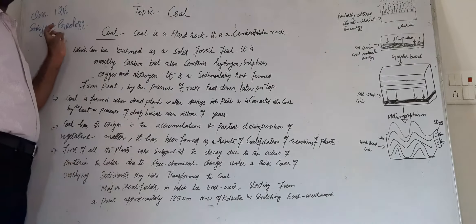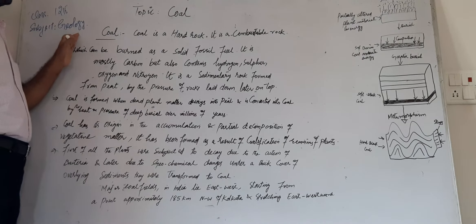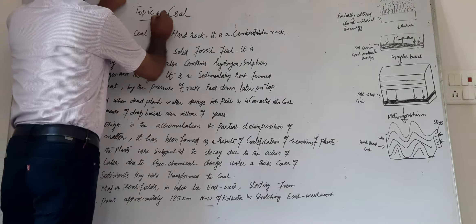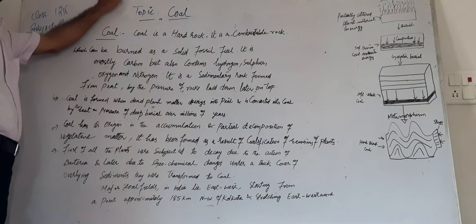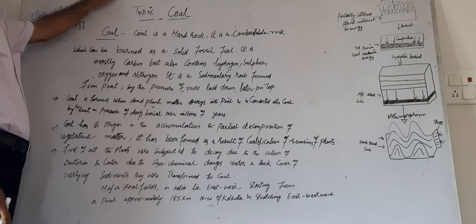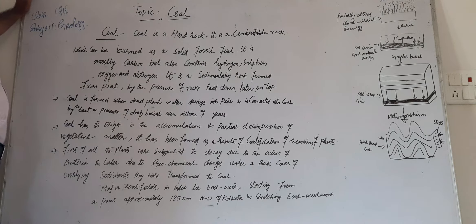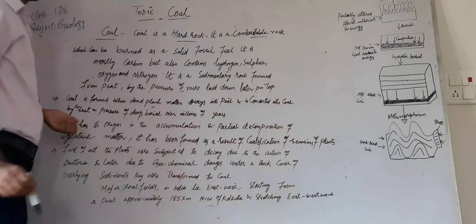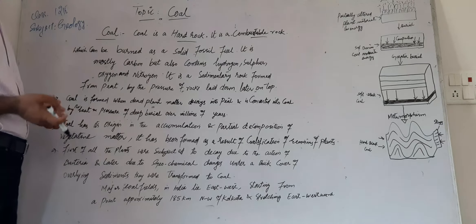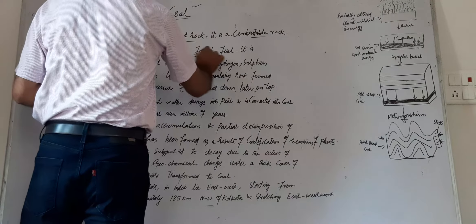Today's class is for 12th grade, subject geology. Today's topic is coal. What is coal? Coal is also a fossil fuel — we can understand it as a hard rock. It is a combustible rock which can be burned as a solid fossil fuel, so coal is a solid fossil fuel.